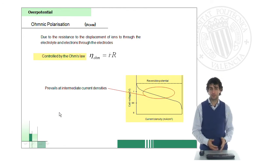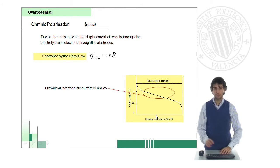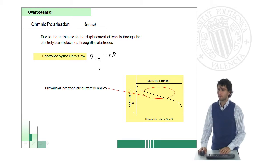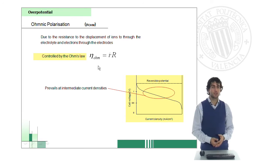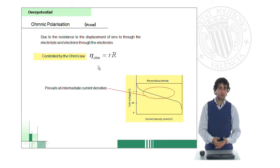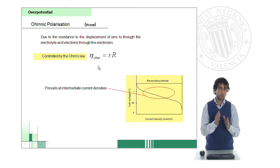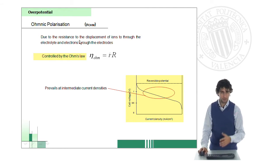The second one is the ohmic polarization or overpotential, they are synonyms. It happens in this region of the polarization curve, probably at intermediate current density. In this case, this linear slope, well, this linear curve, is controlled by the ohm's law. And ohmic polarization is mainly due to the different resistances, physical resistances of the components of the cell, mainly the charge and electronic resistances, as it happens in a resistor.